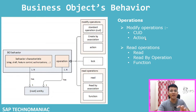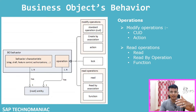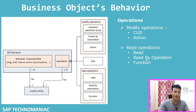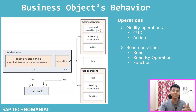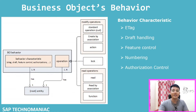Regarding read operations, you can do a normal read, and if you have multiple entities in one business object, you can read along with the root entity using read-by-association. Apart from that, we have functions. Actions perform modifications in the system, but functions are used only for read purposes. This is similar to OData function imports - the same concept applies here in RAP with actions and functions.